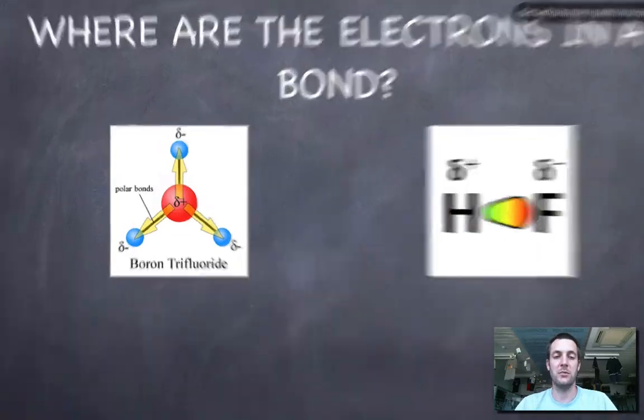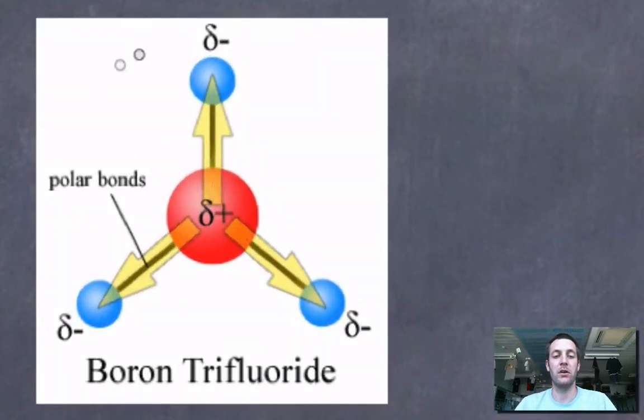So if I take an example that we've looked at quite a lot now, boron trifluoride, I can say that the fluorine atoms, which are much better at attracting electrons than the boron, will pull the electrons in the bonds towards themselves and pull them away from the boron. Now what this means is there'll be an uneven distribution of charge. The electrons won't be exactly halfway between these two atoms.